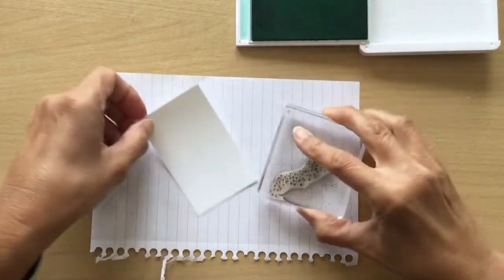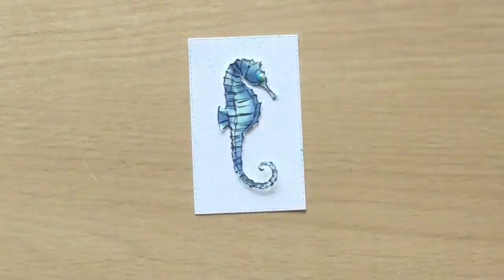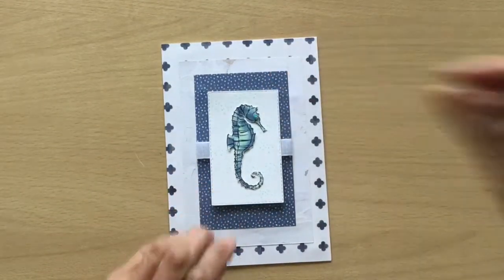And then I'm going to stick my seahorse onto the middle of this. I'm going to bring the card back in and place this in the middle here.